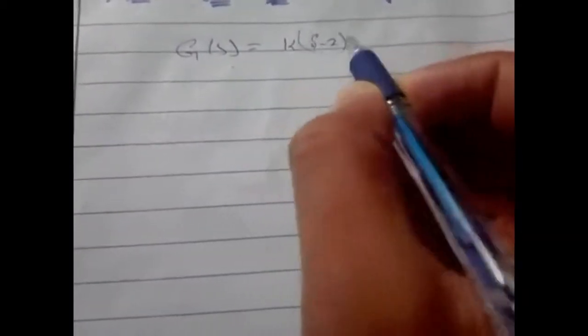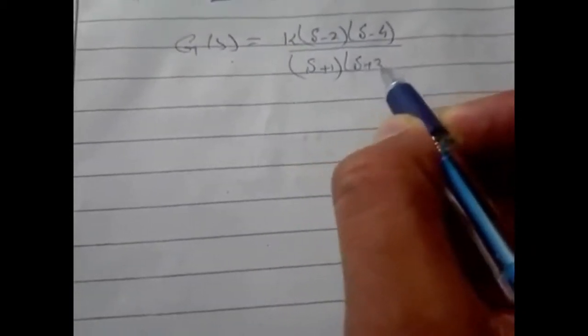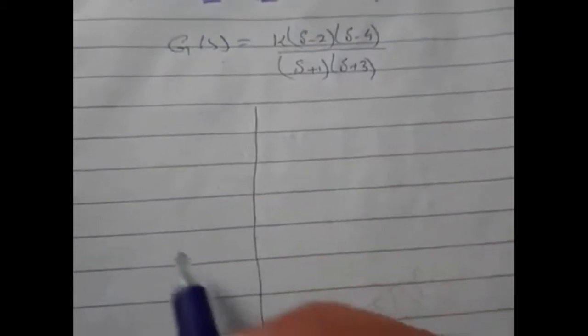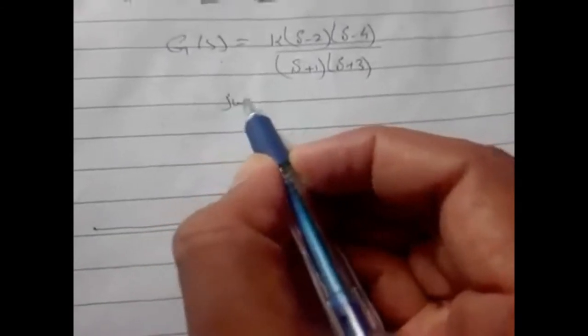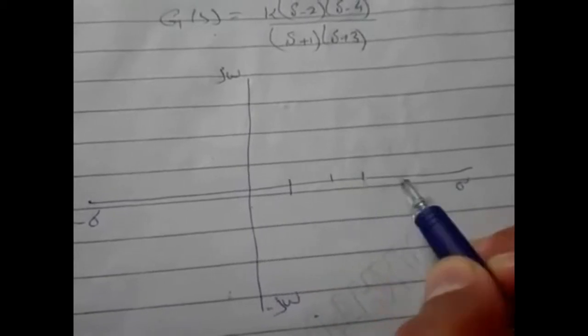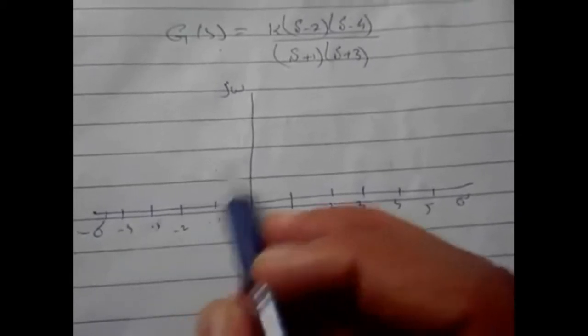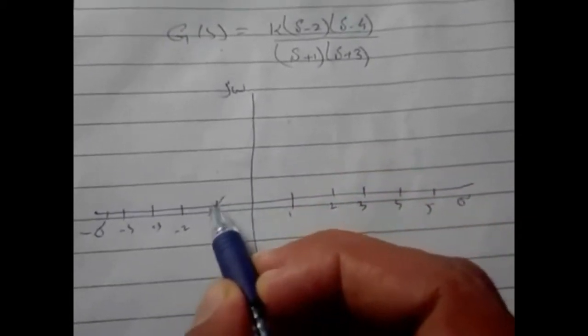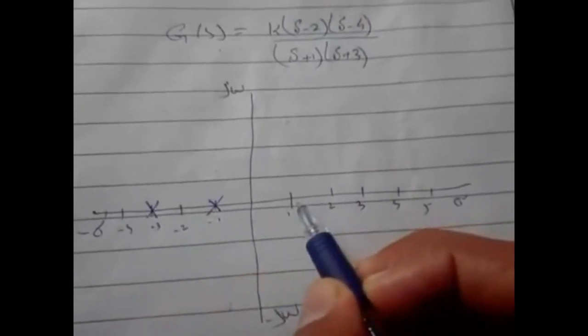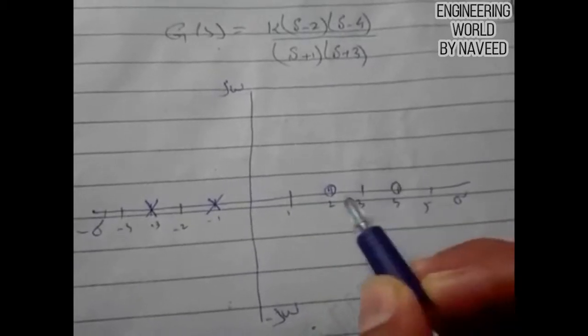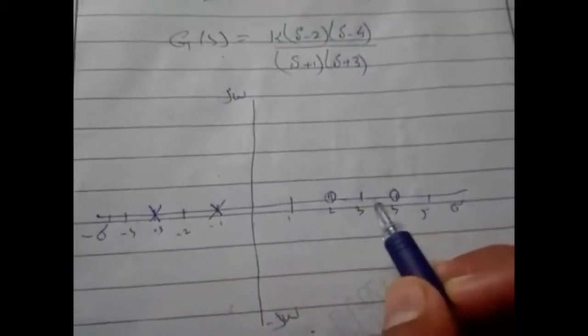G(s) = k(s − 2)(s − 4) divided by (s + 1)(s + 3). If you plot it on graph paper, one pole is at minus one, another pole is at minus three, one zero is at two, and another zero is at four. Between these two poles we have a breakout point and between the zeros we have a break-in point.